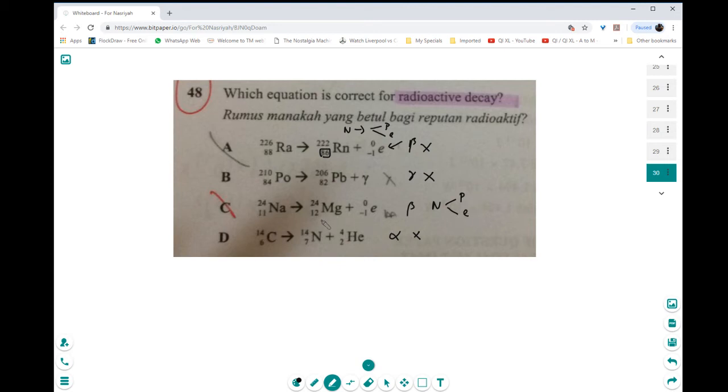So you've got the proton here—proton plus one. And you've got an electron here, right? So the answer is C.